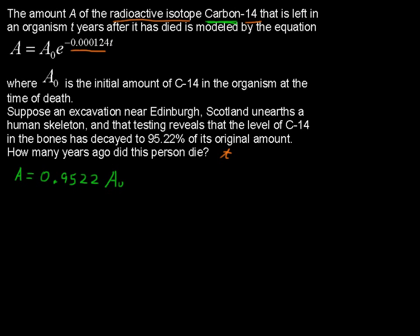So instead of writing A in the equation again, we're going to write 0.9522 times A sub 0. I'll use a bright color so you can see it. That's 0.9522 A sub 0 equals A sub 0.